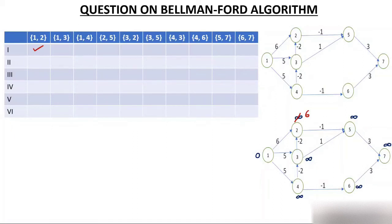Relax edge 1-3: 0 plus 5 is 5, less than infinity — relax, node 3 becomes 5. Relax edge 1-4: 0 plus 5 is 5, less than infinity — relax, node 4 becomes 5.